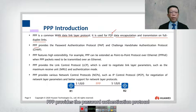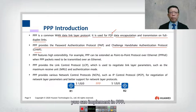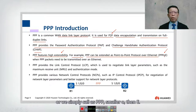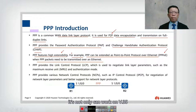PPP provides the Password Authentication Protocol (PAP) and Challenge Handshake Authentication Protocol (CHAP). These are optional authentication protocols you can implement in PPP. PPP features high extensibility, meaning it can adapt to different types of media. For example, PPP can be extended as PPPoE (PPP over Ethernet) when a PPP packet needs to be transmitted over Ethernet. PPP is very extensible — it can work on V.35 and also run on Ethernet.